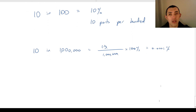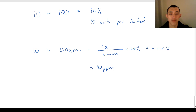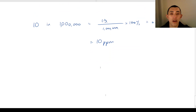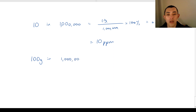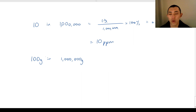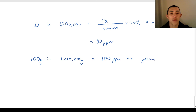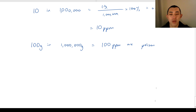Instead of using percentages, we can use parts per million. So in this case, if we have 10 parts in 1 million parts, we would simply call this 10 parts per million. And that's all there is to it. For example, if I had 100 grams in 1 million grams — say in 1 million grams of sugar, 100 of them were poison — then I could call this 100 parts per million of poison.